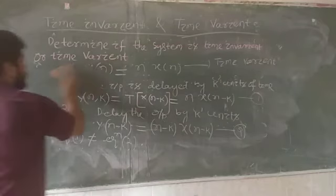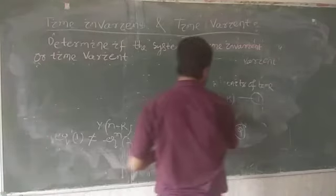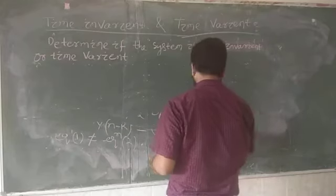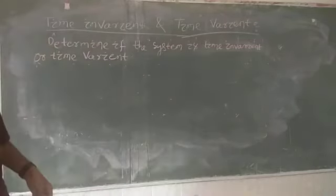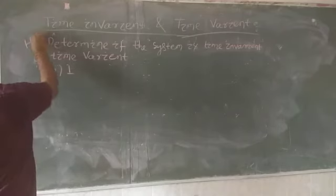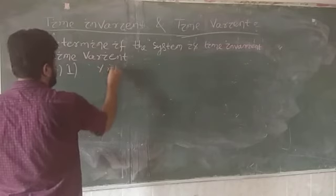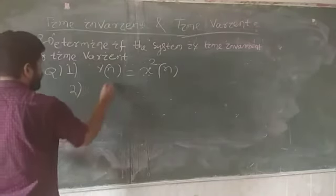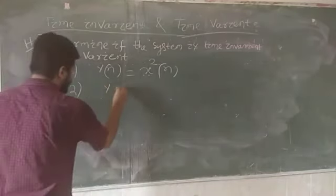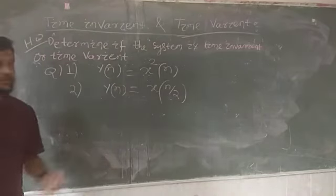For homework, solve the following questions and determine whether each system is time invariant or time variant. Question one: y(n) = x²(n). Question two: y(n) = x(n/2). Try these and comment your answers.